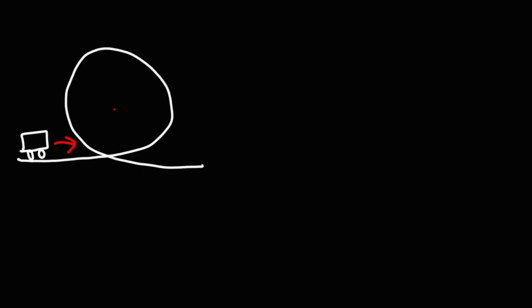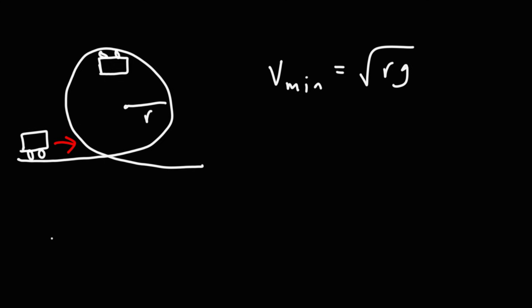If you have a roller coaster and you want it to have enough speed to safely make it to the top and through the loop without losing contact with the road, the minimum speed required is the square root of rg, where r is the radius of the circle and g is the gravitational acceleration, 9.8 meters per second squared.